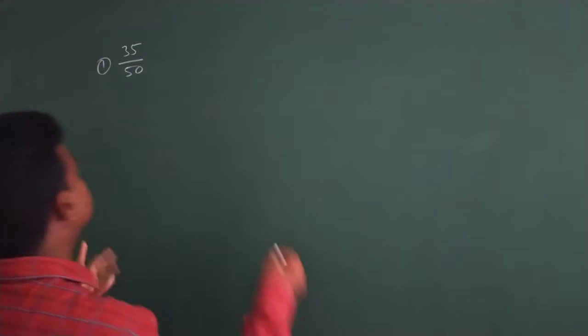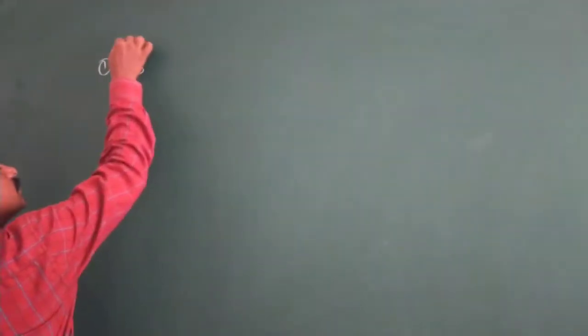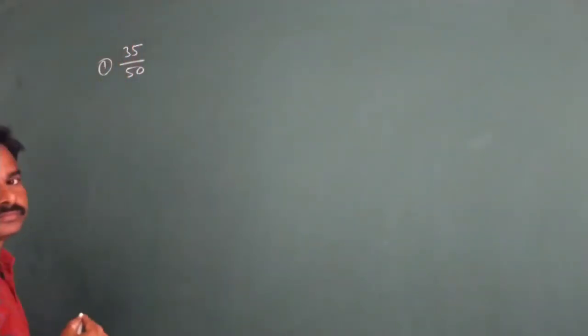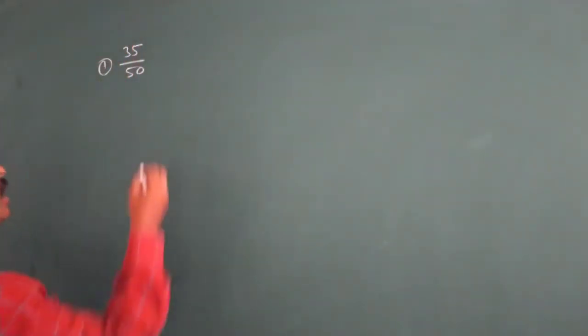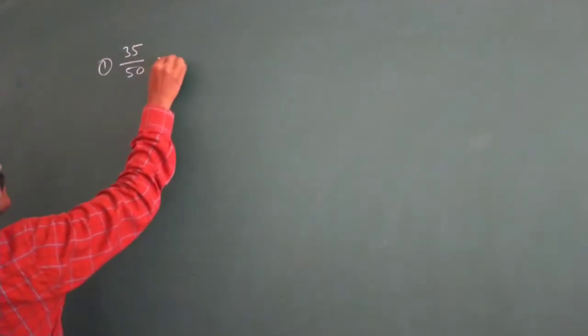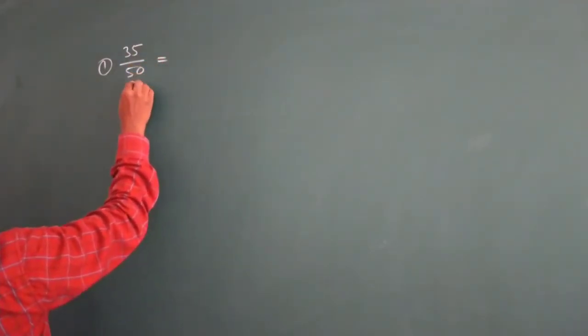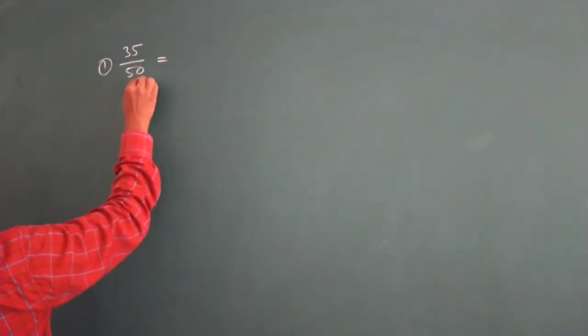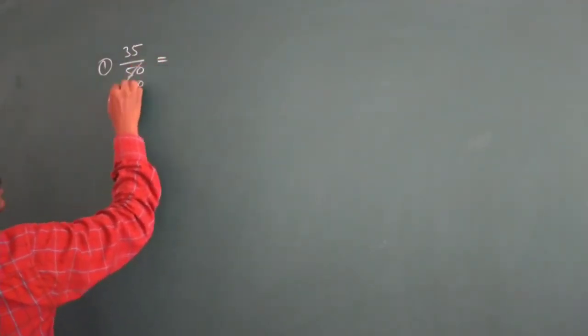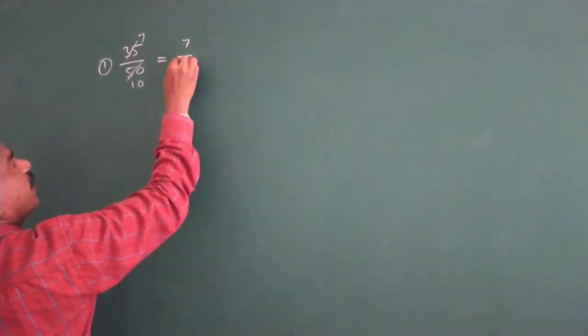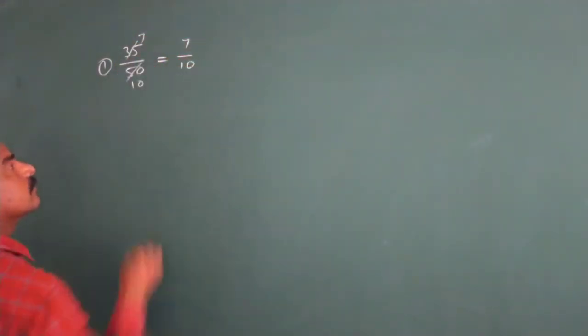First, we have to simplify this number. After simplifying, we get 7 by 10.